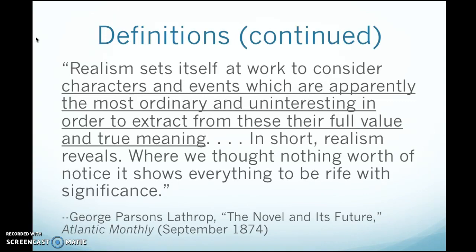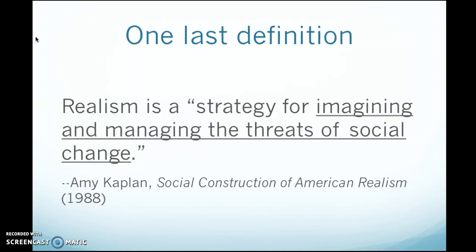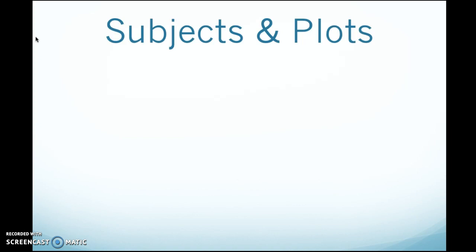One last definition: more recently, a scholar Amy Kaplan wrote that realism is 'a strategy for imagining and managing the threats of social change.' So a lot of the fiction that survives from that time is looking at how to deal with the big social issues of the day. Now let's look at some characteristics and techniques of literary realism. I'm about to go over some generalizations — not all realistic fiction did the same thing, and some of what I'll cover applies to literature from other periods as well. But generally, these are things you can expect in the realistic works we'll be reading.